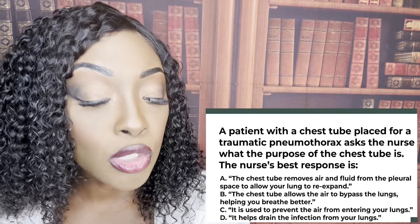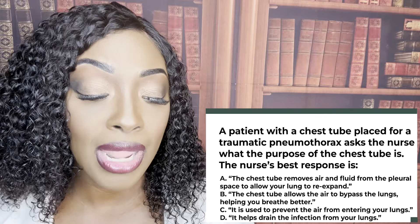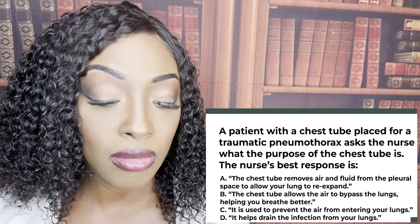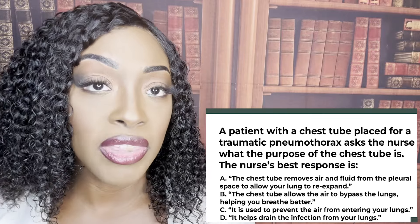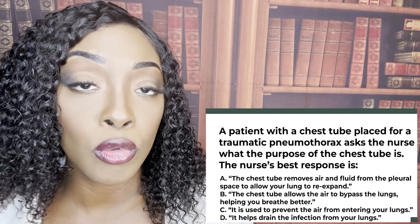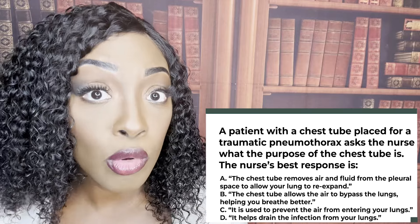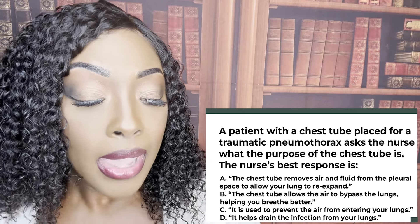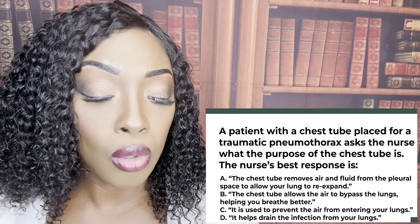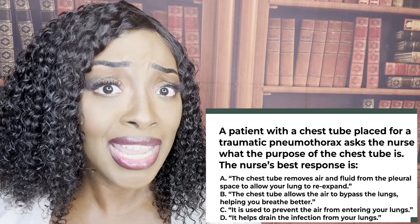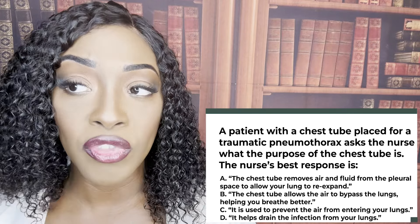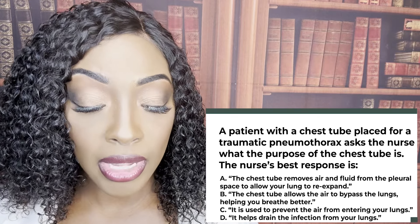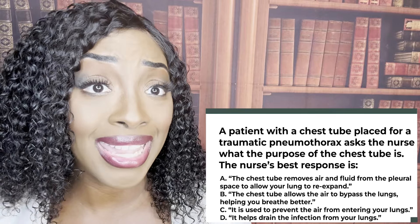The correct answer is A — a chest tube removes air and fluid from the pleural space to allow your lungs to re-expand. We're talking about a traumatic pneumothorax — trauma such as an MVA or a stab wound — which causes air and/or fluid to enter the pleural space. The chest tube helps remove it. Wrong answers: B, air bypassing the lungs — false. C, preventing air from entering — no, air has already entered and we're trying to remove it. D, draining infection — no, it removes trapped air and fluid. That's why A is correct.